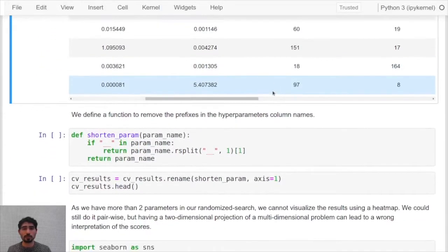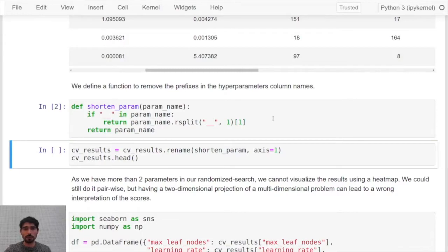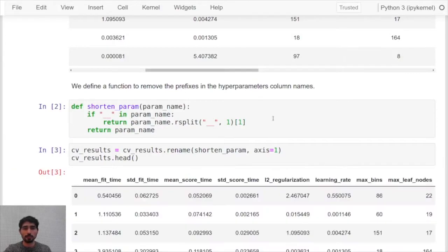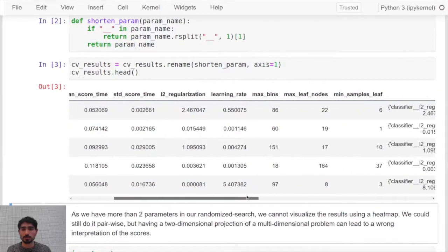One thing that may come to mind is to define this function that will help us remove the prefixes of the hyperparameters, and then we'll have a second look at the dataset with this cleaner version of the column names.